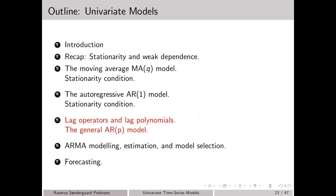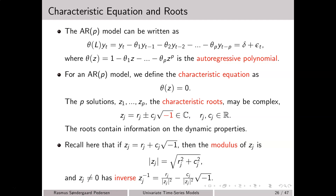In this video, we consider stationarity conditions for an autoregressive model of order 2. We start out by considering an autoregressive model of order p. In a previous video, we showed that the autoregressive model of order p can be written in terms of the autoregressive polynomial theta(L). In particular, theta(L) times y_t is simply a constant delta plus some noise term epsilon_t. Theta as a function of z is a p-degree polynomial.